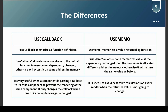Key differences: useCallback memoizes a function definition, while useMemo memoizes a value returned by a function. useCallback allocates a new memory address for the function on dependency change; otherwise it reuses the same address. useMemo stores the value — if the dependency changes, a new value is allocated a different address in memory; otherwise it returns the same value. useCallback is useful when passing a callback to a child component to prevent unnecessary re-rendering. useMemo is useful to avoid expensive calculations on every render when the return value hasn't changed.